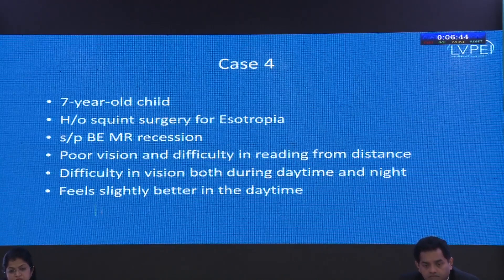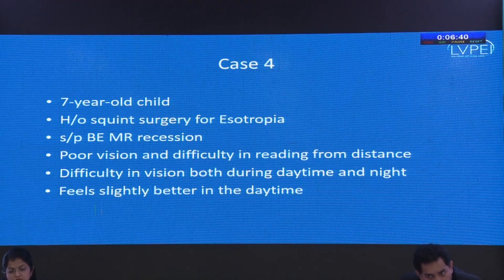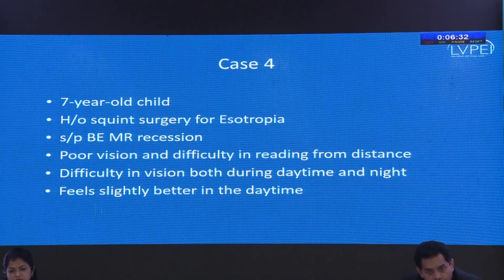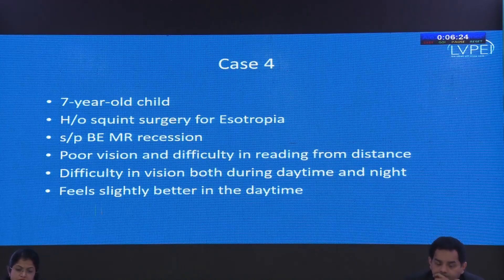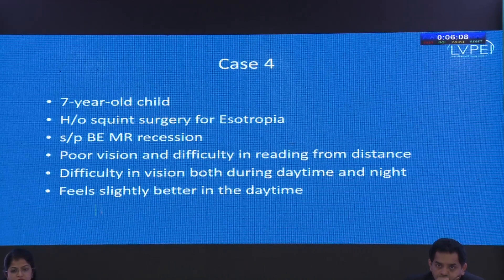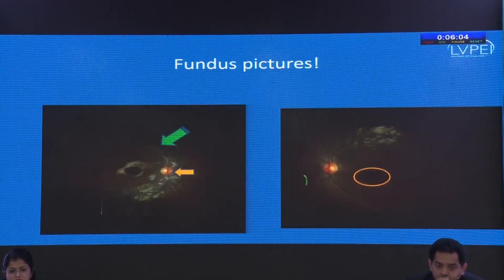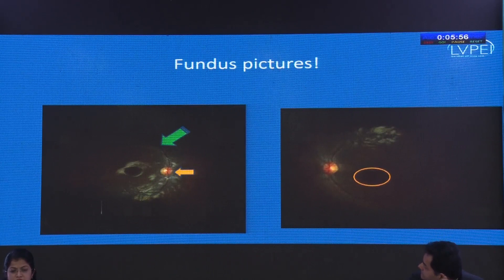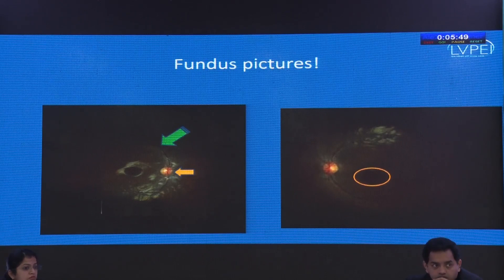Case 3 — apologies for the reordered slides — is a seven-year-old child who came for squint surgery for esotropia and had undergone medial rectus recession in both eyes. The presenting complaint now is poor vision and difficulty reading from distance, despite the squint surgery done years ago. Importantly, the vision difficulty is present both daytime and nighttime, slightly better in the daytime. Fundus examination shows subtle disc pallor, attenuation of blood vessels, and pigmentary changes in the foveal area.